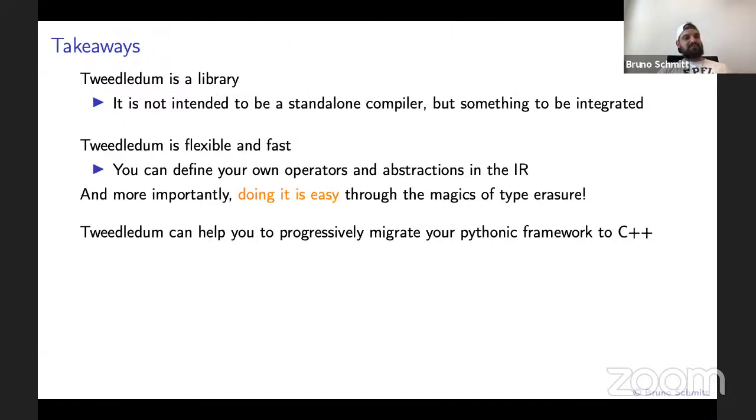Now let me briefly finish with some takeaways of this talk. Tweedledum is a library, really important, it is not intended to be a standalone compiler. It is something to be integrated into other compilers. It is flexible and fast. You can define your own operators and abstractions in the IR, and more importantly, you can do that quite easily through the magic of type erasure. Tweedledum can help you to progressively migrate your Pythonic framework to C++. I'll be happy to take any questions.